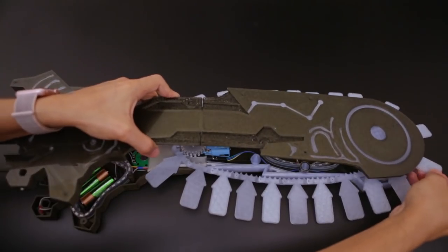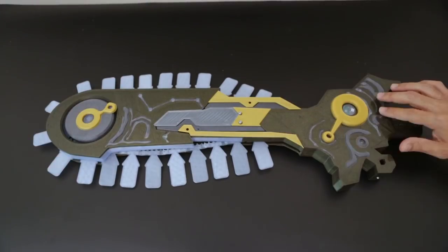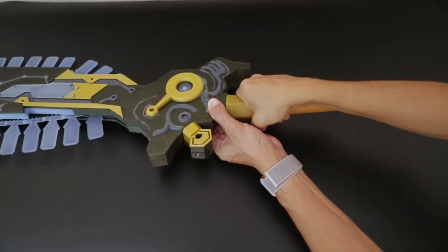The two halves are joined together and secured with machine screws. Various embellishments are glued to the outside. Parts of the handle are press fitted over the tang.